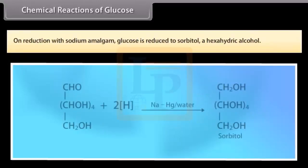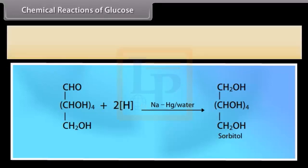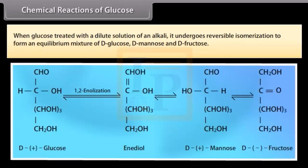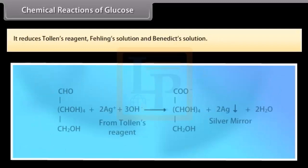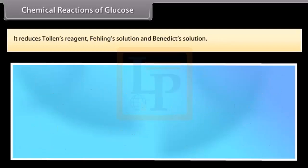On reduction with sodium amalgam, glucose is reduced to sorbitol, a hexahydric alcohol. When glucose is treated with a dilute solution of an alkali, it undergoes reversible isomerization to form an equilibrium mixture of D-glucose, D-mannose, and D-fructose. It reduces Tollens' reagent, Fehling's solution, and Benedict's solution.